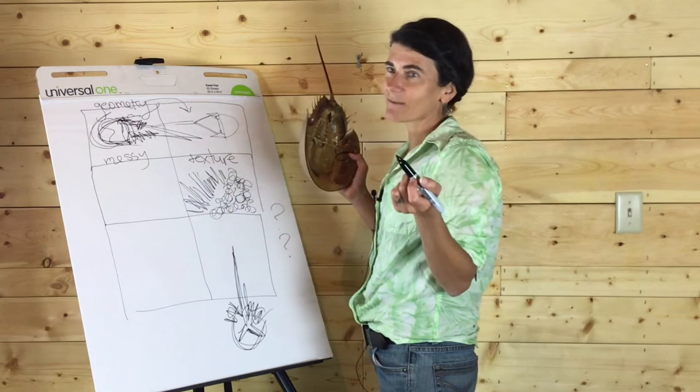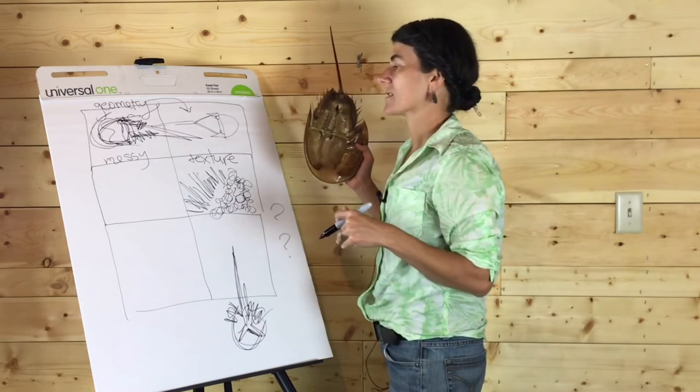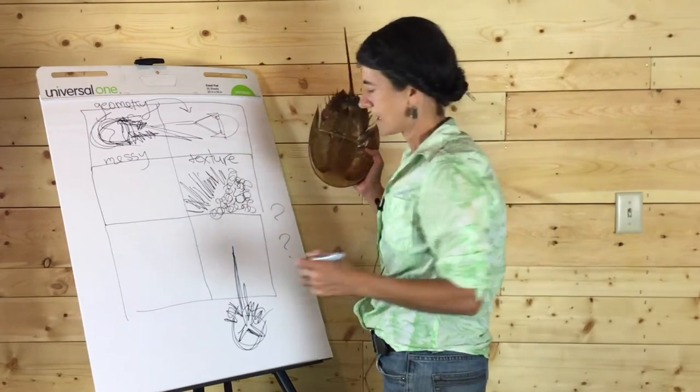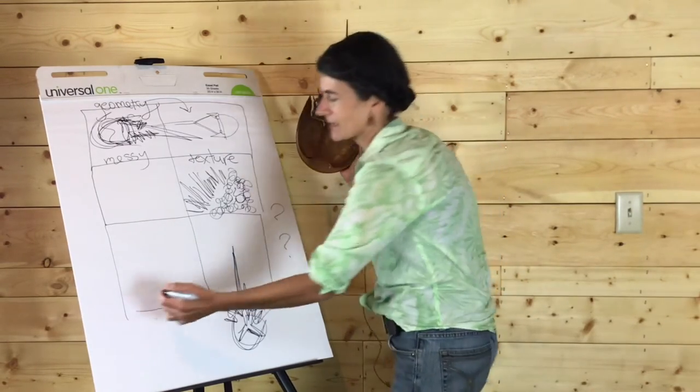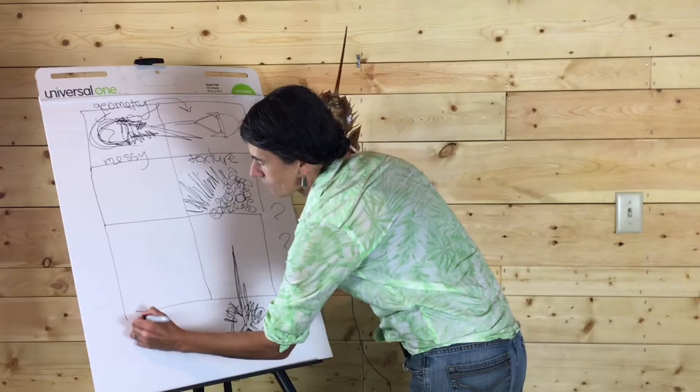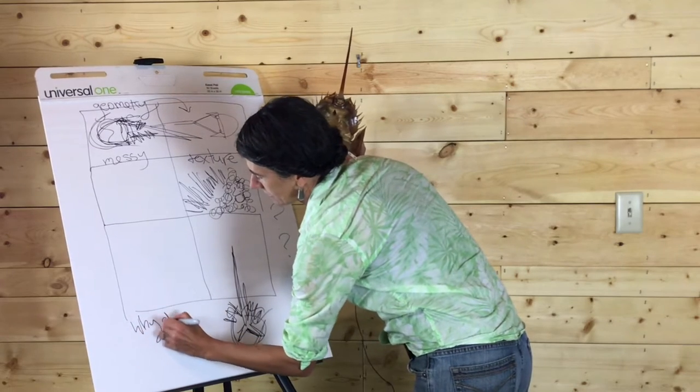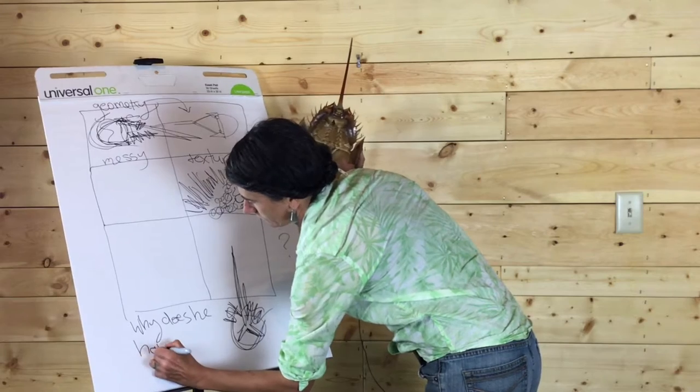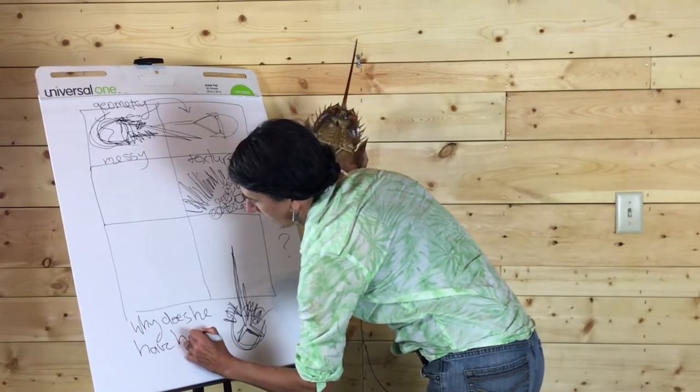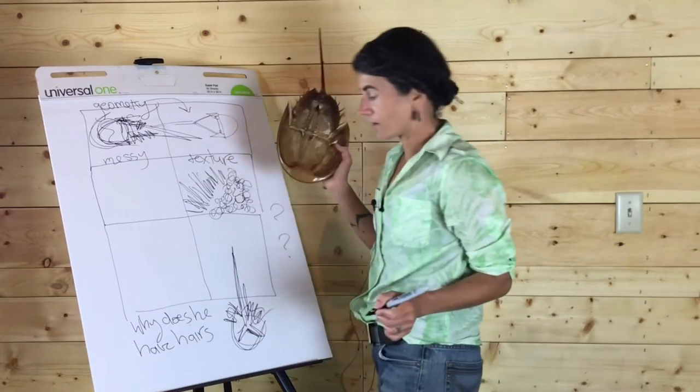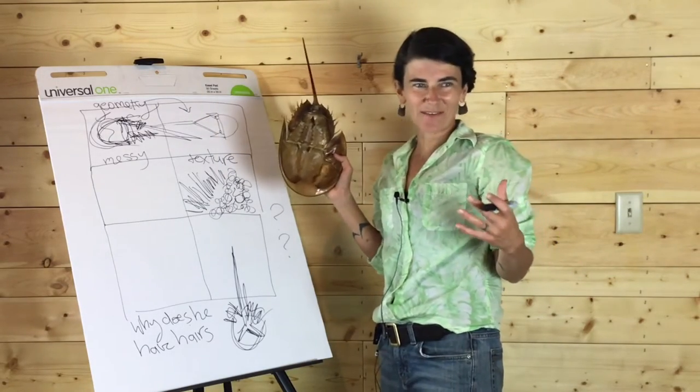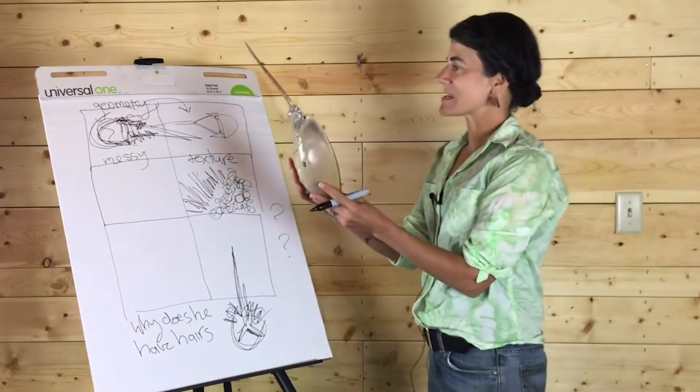And so another really cool part of nature journaling is adding text. And so I want to write right on my page, the questions that are coming up for me and the other kind of verbal observations. So I might say something like, why does he have hairs? I don't know why, but it's something that I could go back and research later. And it's just kind of another piece of the whole puzzle.